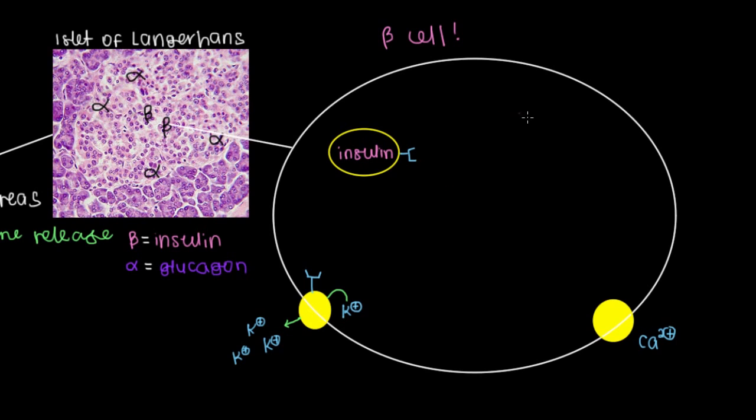Alright, so now we're ready. How does insulin leave the beta cell? Well, the first thing that has to happen is that glucose needs to enter the cell somehow. Because when there's a lot of glucose around, we want to store it away. That's what insulin's supposed to do.